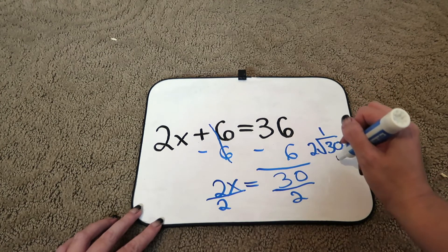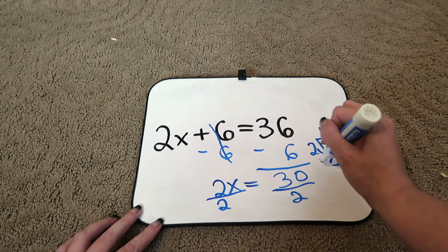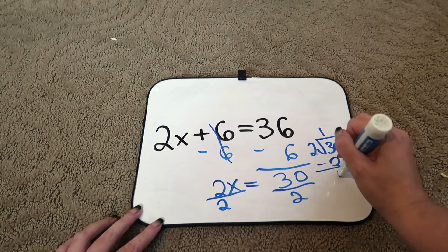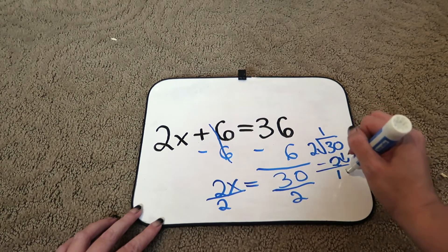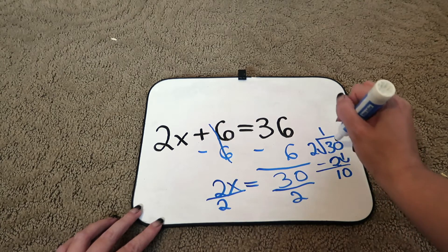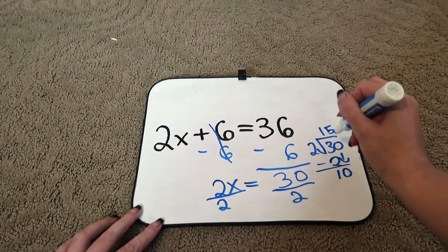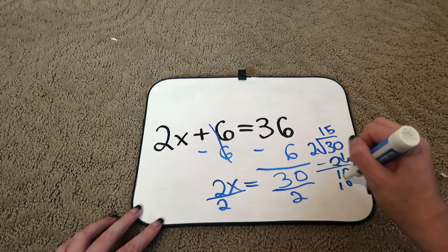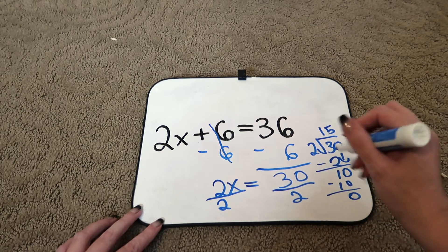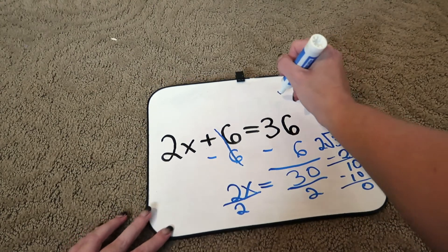2 goes into 3 one time. 2 times 1 is 2. 3 minus 2 is 1. Bring down the 0. 2 goes into 10 five times. 5 times 2 is 10. 10 minus 10 is 0. So now we have x equals 15.